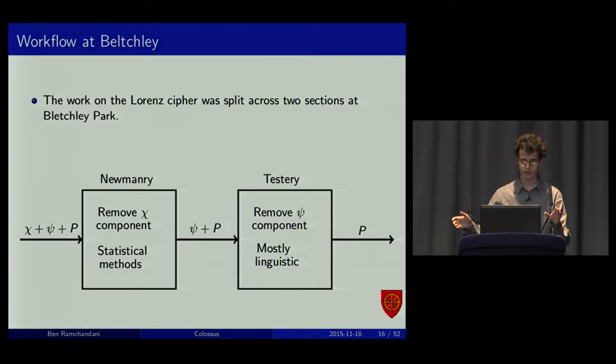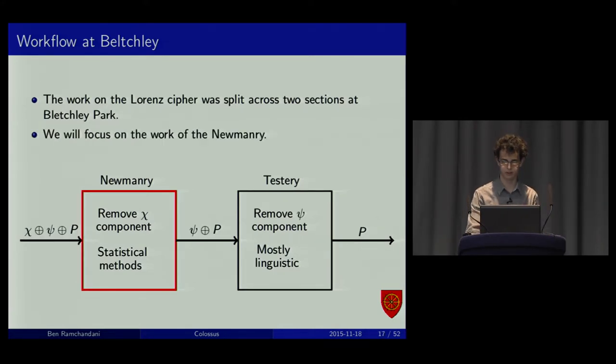That's exactly what was done. You had two sections. The Newmanry, led by Max Newman, another Cambridge graduate and fellow as well. They focused on removing the chi component. So, their output was just, it looked random. It would still have the psi component in it. This was statistical methods because you don't have any reasonable output. This is where Colossus was. That's what I'm going to be focusing on. There was also the testery, led by Ralph Tester. You had to have a good knowledge of German because you'd get German plaintext and that's how you worked out what the psi component was. Also useful to kind of know the habits of the different operators and how they work.